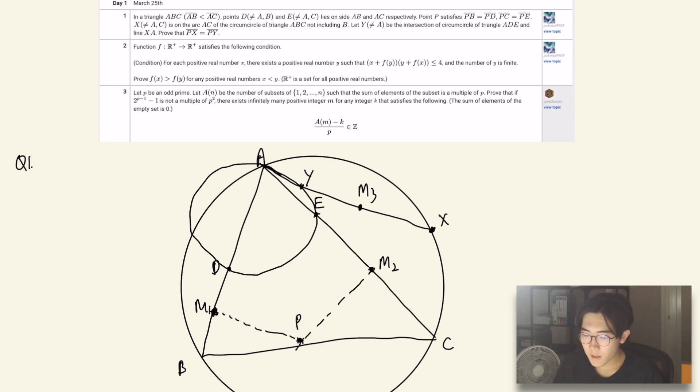And instead of showing that PX equals PY, what we can instead show is that PM3 is the perpendicular bisector of the line XY.